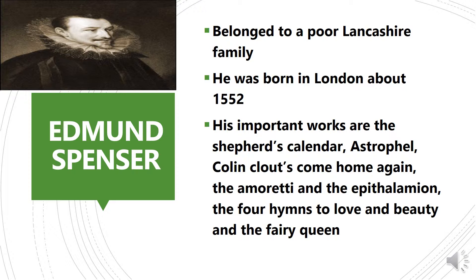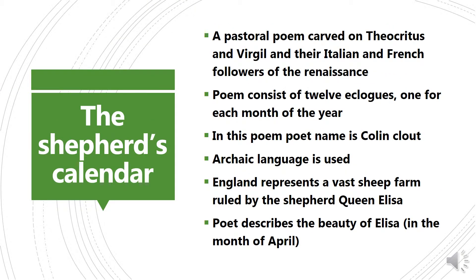Let's begin with The Shepherd's Calendar. It is a pastoral poem modeled on Theocritus and Virgil and the Italian and French followers of the Renaissance. This was his first major poetic work and it consists of 12 eclogues, one for each month of the year.